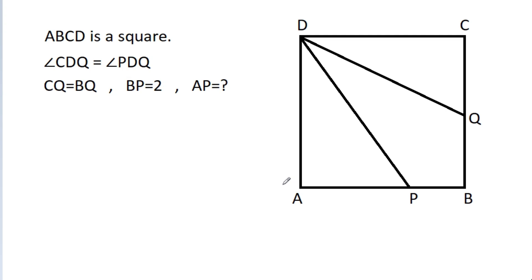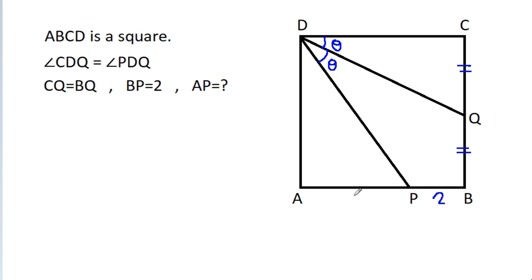In this video, we have been given that ABCD is a square and angle CDQ is equal to angle PDQ, suppose theta, and CQ is equal to BQ and BP is 2. Then we have to find AP.